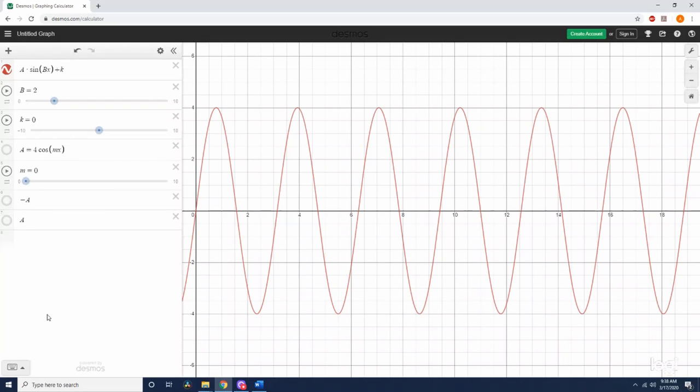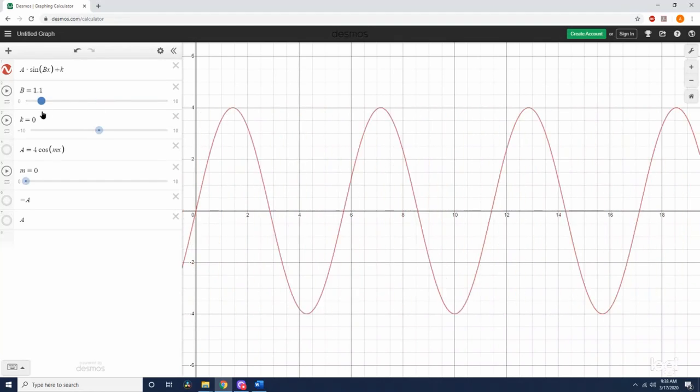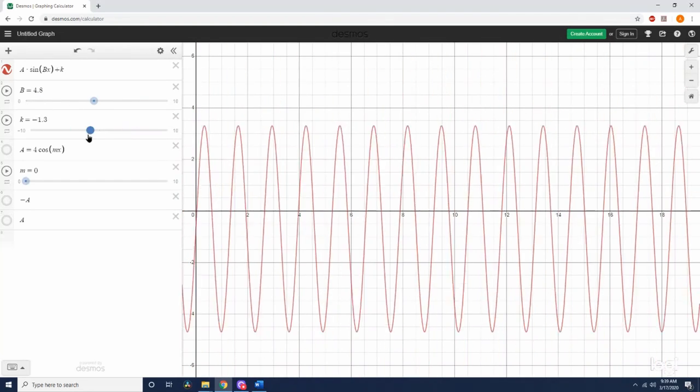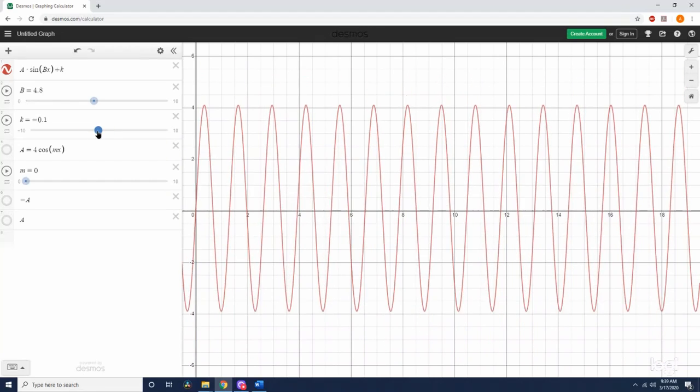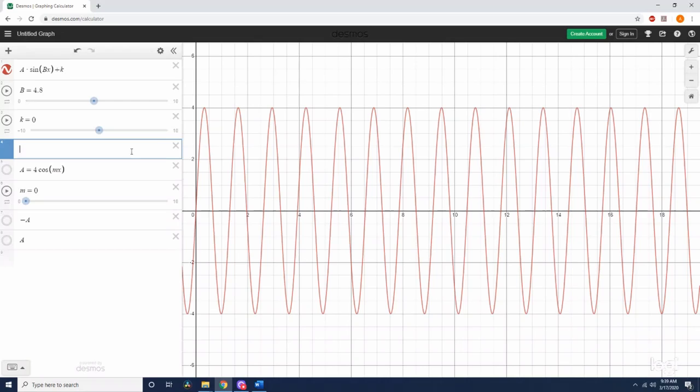Here we are back in Desmos again. I've graphed A sine bx plus k where now a is this function cosine mx. Right now I have m equal to zero, so it's just a regular sine function with an amplitude of 4. We have the value of b which changes the rate of oscillation, and k which is the location of the midline. We're going to set the midline equal to zero for now so we can focus on the new ideas.